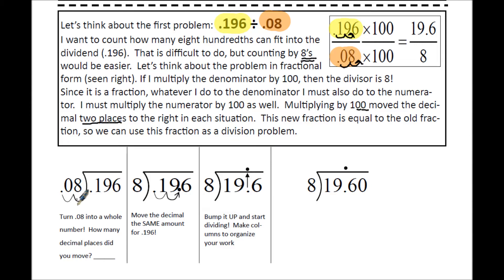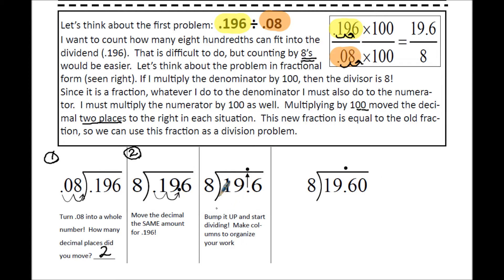For the first step, our goal is to turn 8 hundredths into a whole number, so I'm going to move it two places to the right. The decimal on the inside needs to match the decimal on the outside — so if I move that two places to the right, I need to move the decimal on the inside two places to the right as well. And now I have 19.6, with the decimal in between the 9 and 6.